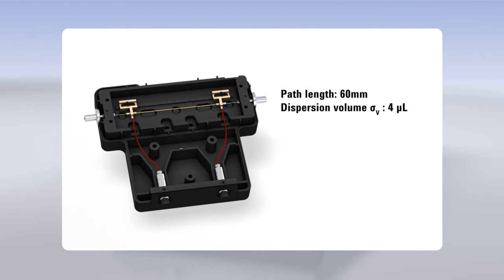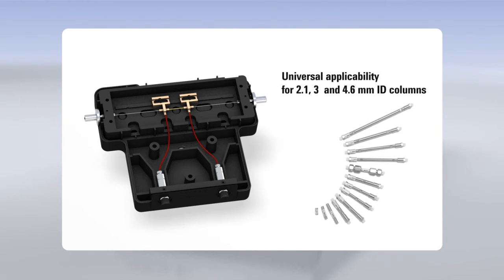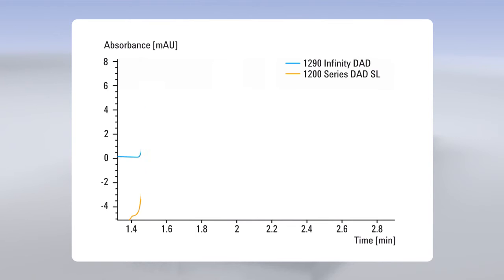A MaxLite flow cell is also available with 10 mm path length and 1 µL dispersion volume when you require highest sensitivity as well as universal applicability for all analytical column dimensions from 2.1 to 4.6 mm inner diameter. The optofluidic waveguides also reduce refractive index effects, resulting in less baseline drift for more reliable and robust peak integration.